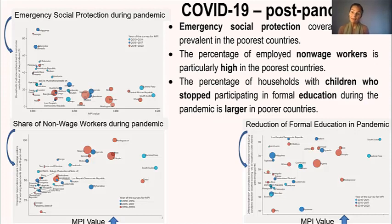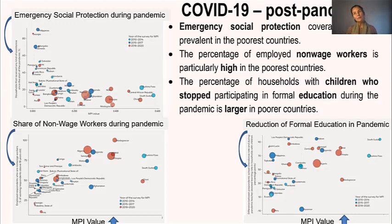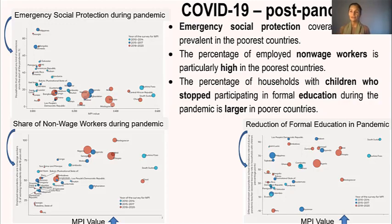We are in a pandemic, and alas we did not have post-pandemic data. So we used the high-frequency post-pandemic telephone surveys of the World Bank to overlay them on poverty. We found that emergency social protection was lower in the poorest countries, the percentage in non-wage informal jobs was high, and children out of school because of the pandemic was also larger in the poorest countries.